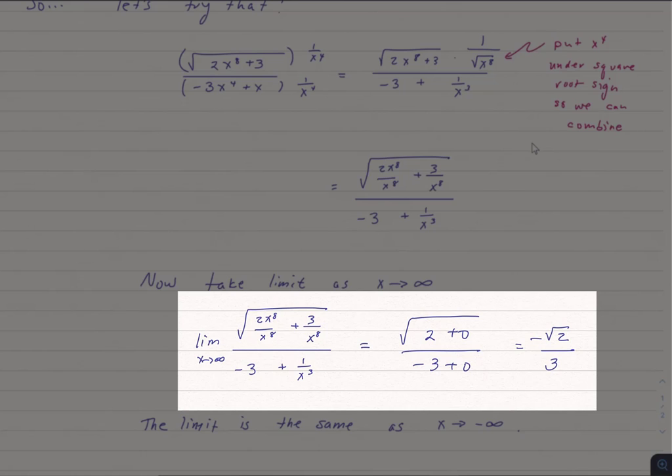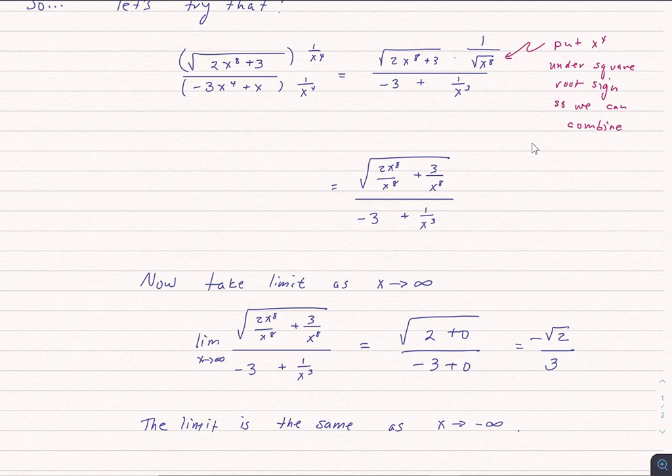So when we're done with this, we're ending up with simply negative square root of 2 over 3. And we notice that that's the same value whether we take x to negative infinity or positive infinity, because those fractions, the 3 over x to the eighth and the 1 over x to the third, they both go to 0.